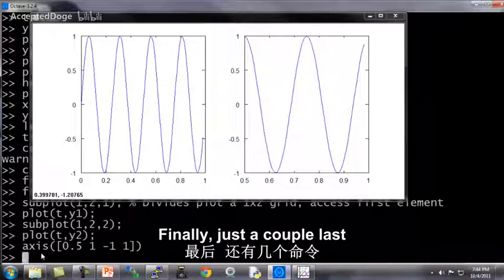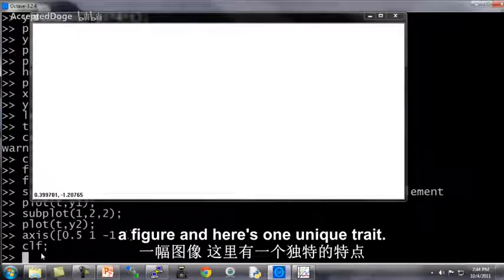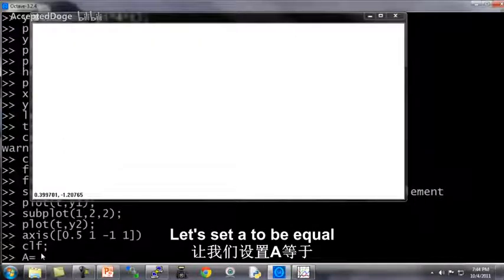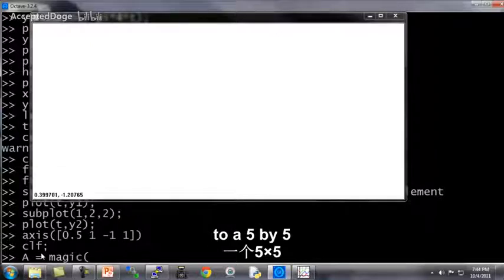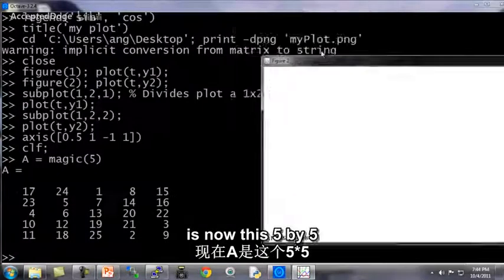Finally, just a couple of last commands. CLF clears a figure. And here's one more neat trick. Let's set A to be equal to a 5 by 5 matrix square. So A is now this 5 by 5 matrix.